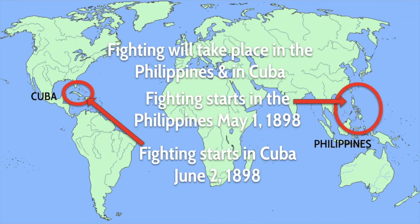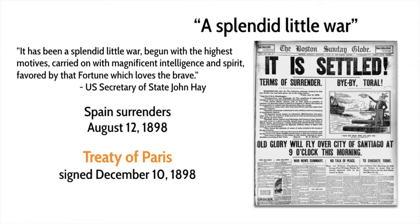The United States had a relatively small military force and had to get itself organized in order to invade Cuba. There will also be a little bit of fighting in Puerto Rico, but most of the fighting is going to take place in Cuba. The war itself is going to be relatively quick — only lasting 144 days. According to U.S. Secretary of State John Hay, it was 'a splendid little war,' begun with the highest motives, carried on with magnificent intelligence and spirit, favored by that fortune which loves the brave.